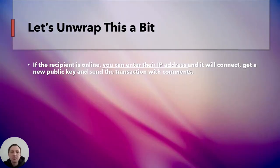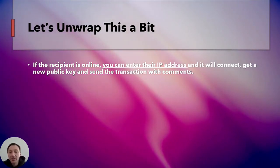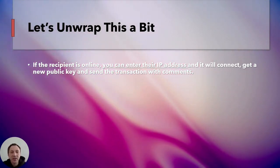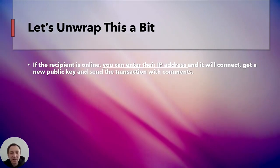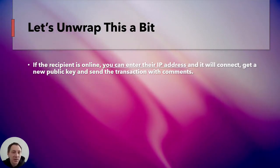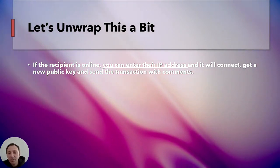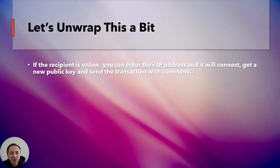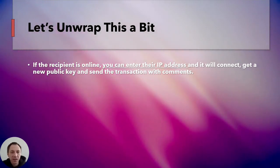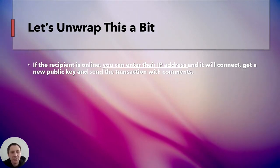How did this work? The readme says that if the recipient is online, you can enter their IP address and it will connect, get a public key, and send a transaction. The vision was that people running Bitcoin would probably be online, and you could just get their IP address, make a connection, and do a transaction that way — like most peer-to-peer applications did at the time.